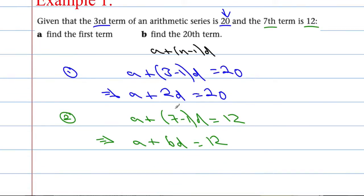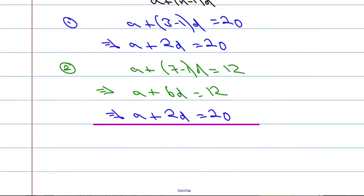I would really like to know what A is. We've got two equations and two unknowns, so we're going to have to use simultaneous equations. What we're going to do is equation 2 take away equation 1. A take away A is 0. 6D take away 2D is 4D, and 12 take away 20 is negative 8. That means that the common difference D is going to be negative 2.